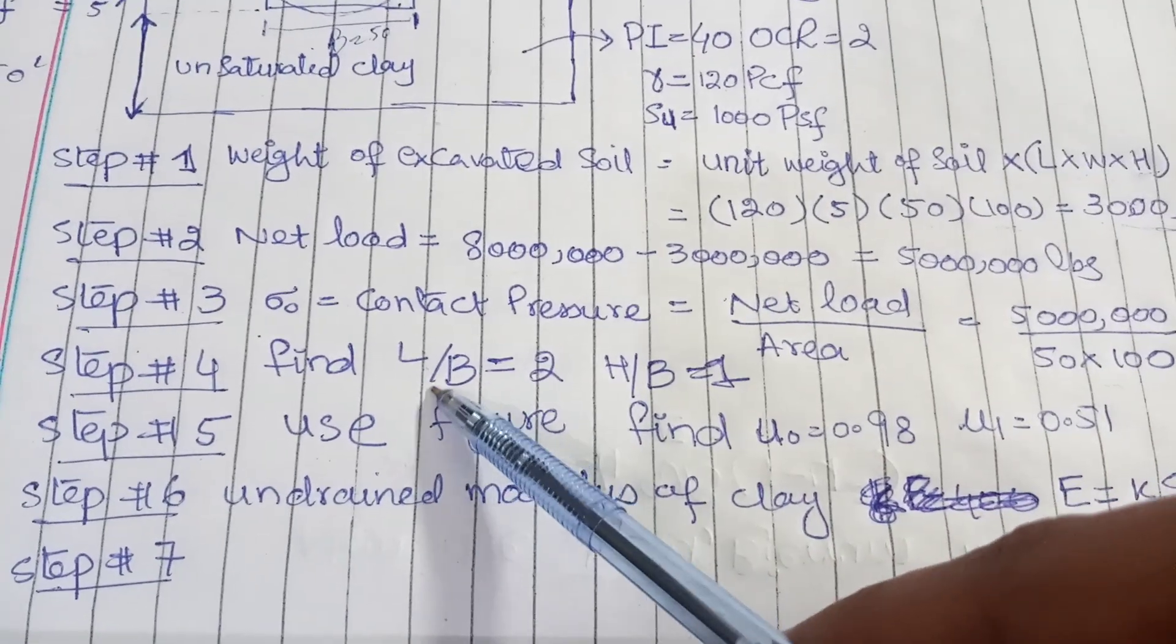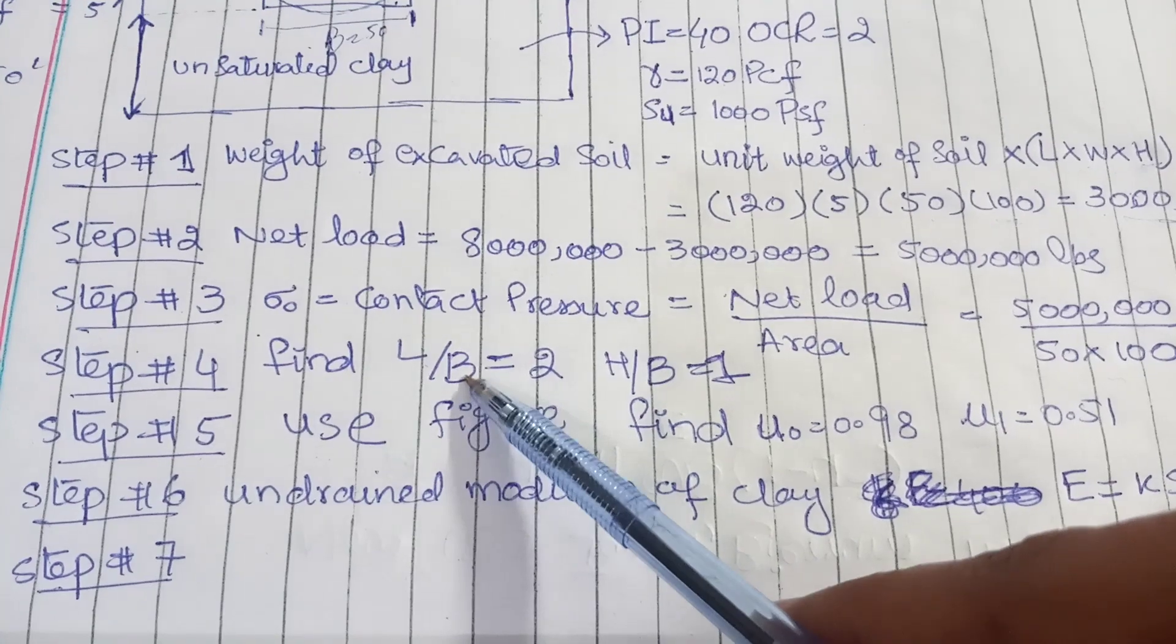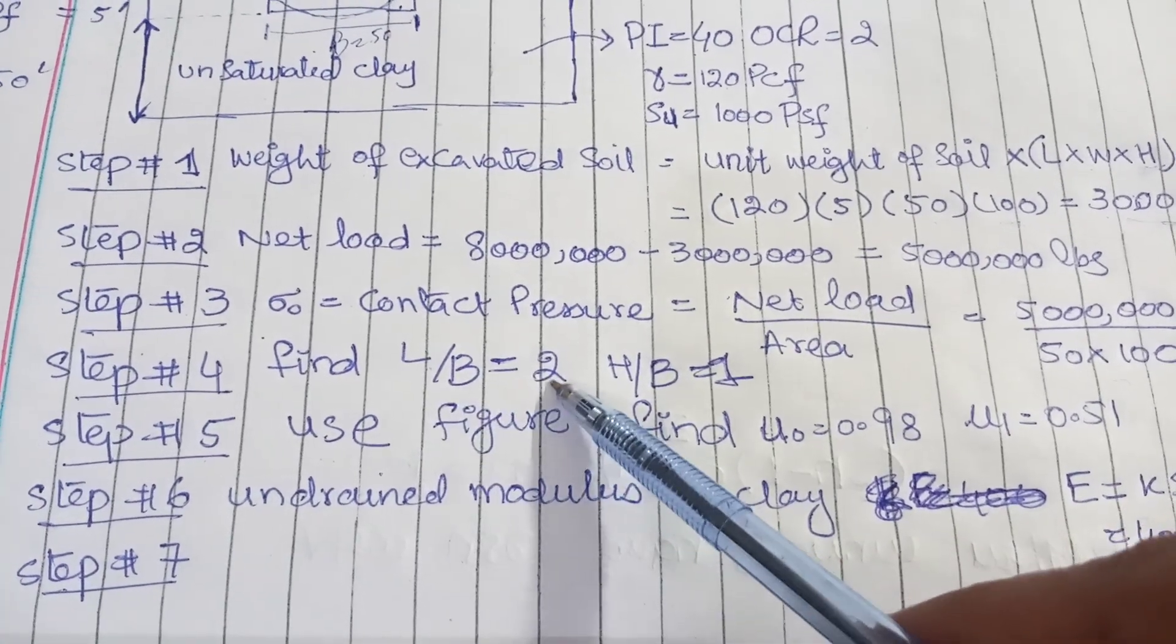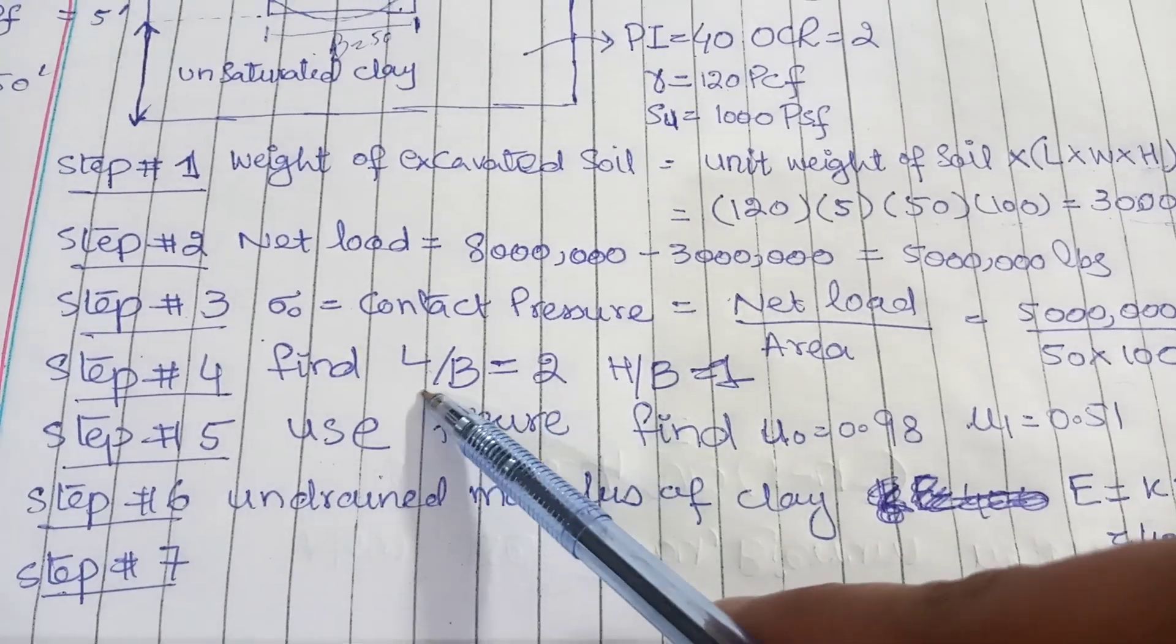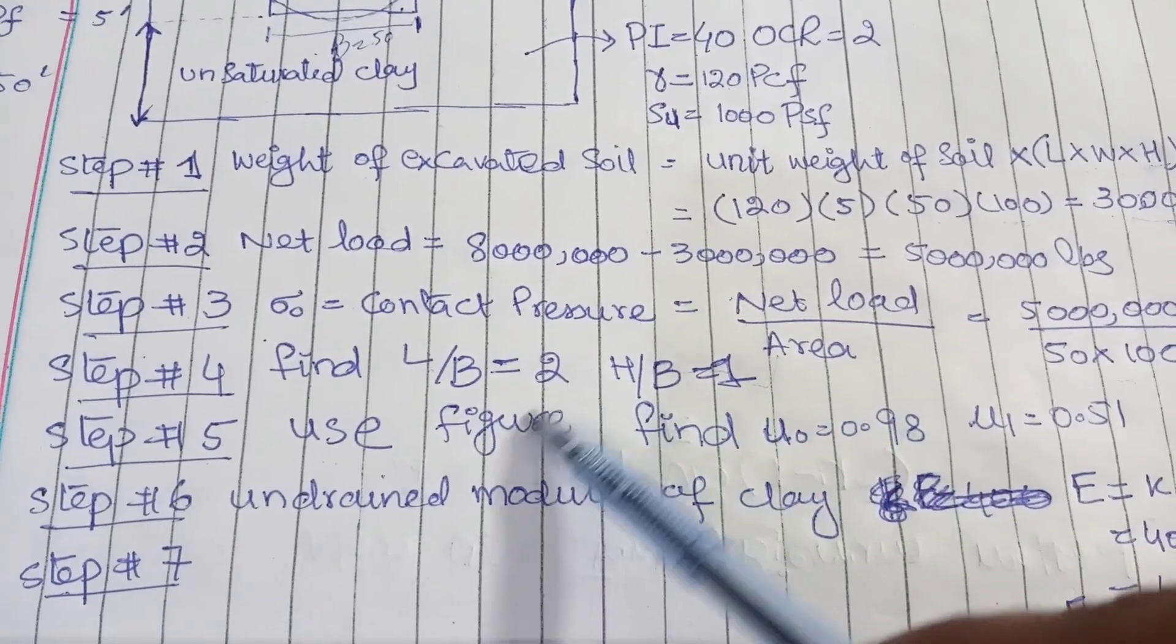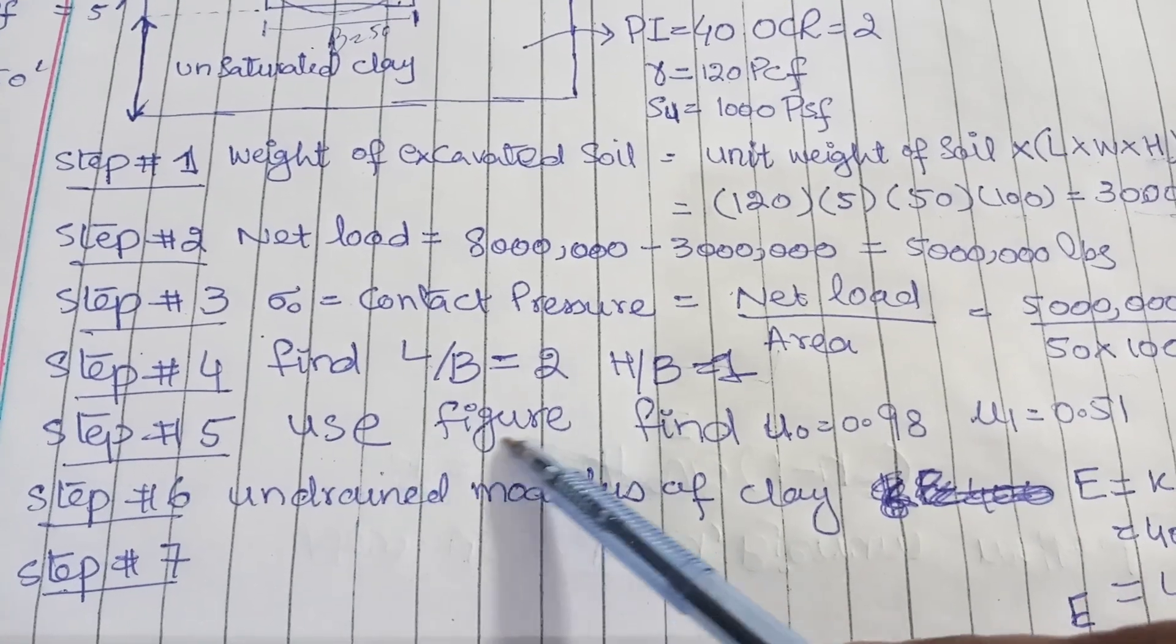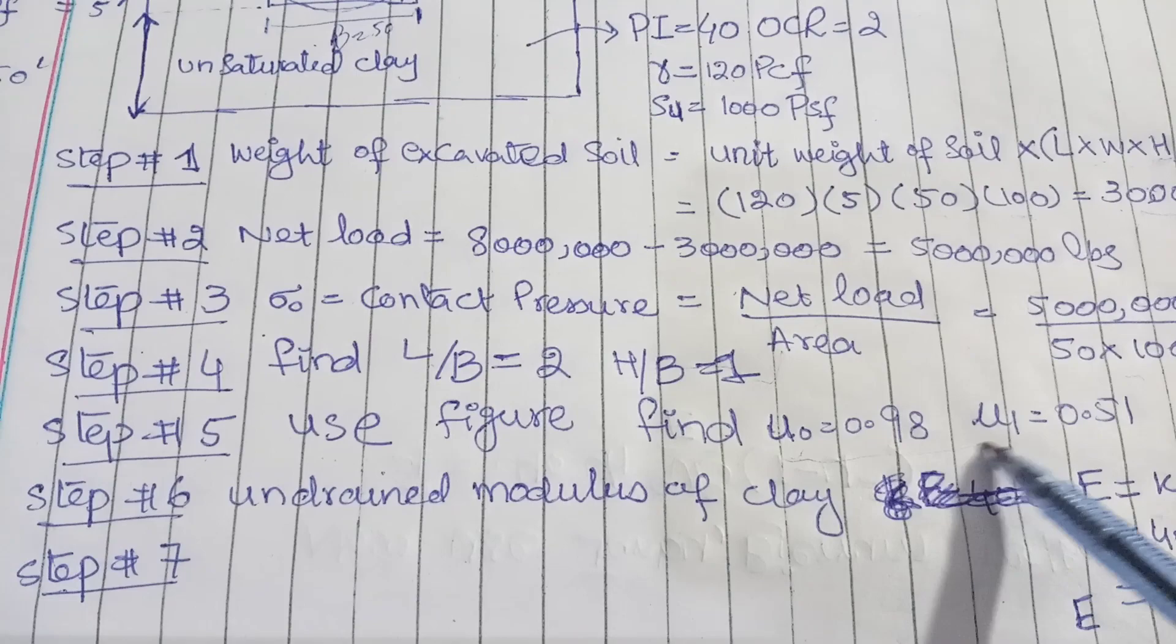In step 4, we will find the ratio of L over B and H over B. Here in this case, L over B is equal to 2, H over B is equal to 1. Why do we find this? We find this ratio because we will use this ratio in a figure to find coefficient u0 and u1.